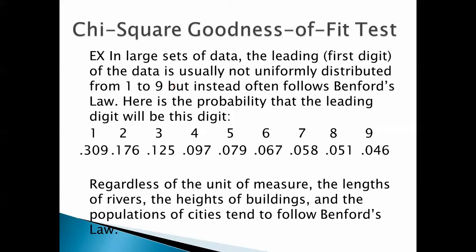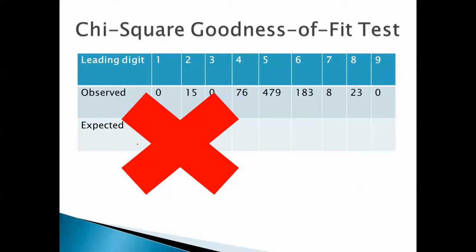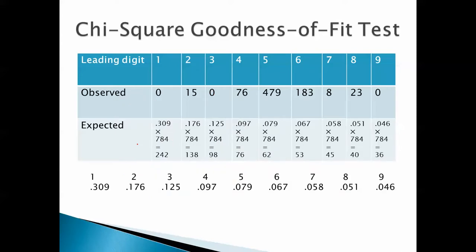As for our expected frequency, we get those from here. Now, what you don't want to do is say, the probability is 0.309, so that's what we enter as 1. No. That's not right. 0.309 is the expected probability for one check.